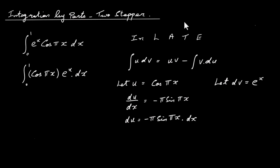On the right hand side, dv equals e to the power of x. Integrating both sides gives v equals e to the power of x. At this stage I'm going to ignore the limits and put them in later once the integral is completed. I'll call this integral I — you'll see why in a few minutes.